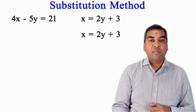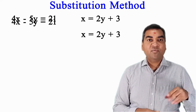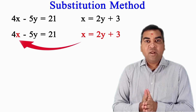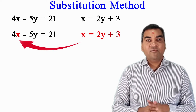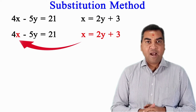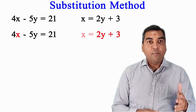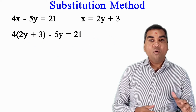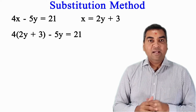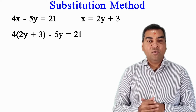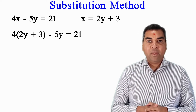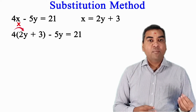So the value of x, which is 2y plus 3, I am going to substitute into the other equation: 4x minus 5y equal to 21. Replacing x with 2y plus 3, the equation becomes 4 times bracket 2y plus 3, minus 5y equal to 21. I am only substituting the x value — everything else stays the same.